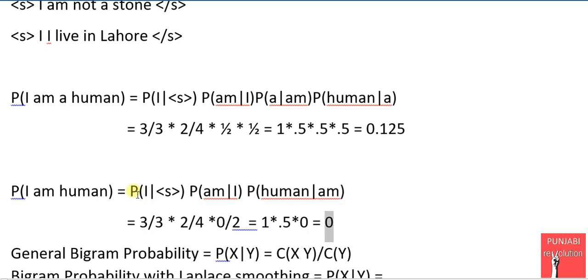How? Probability of this bigram is 1 and probability of this bigram is 0.5 and probability of human given m. We have to find the count of m human divided by the count of m.